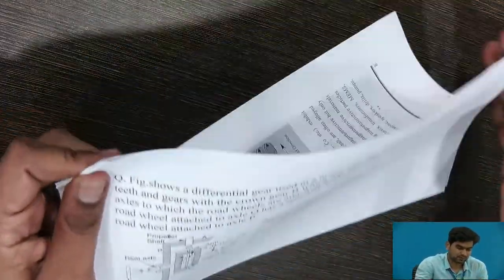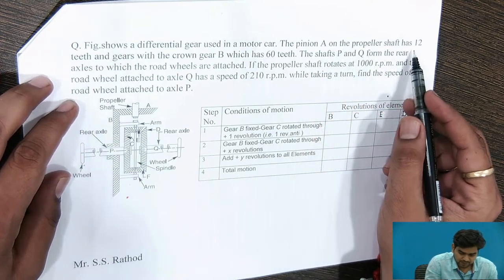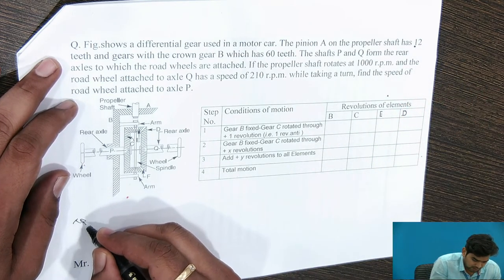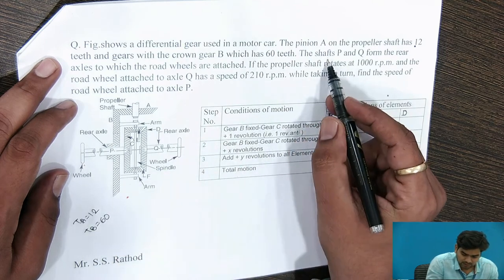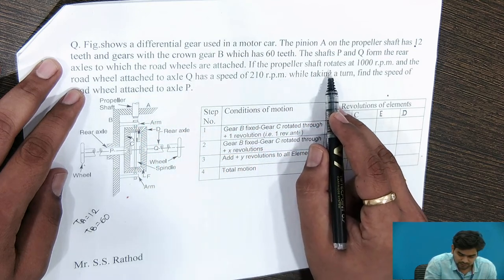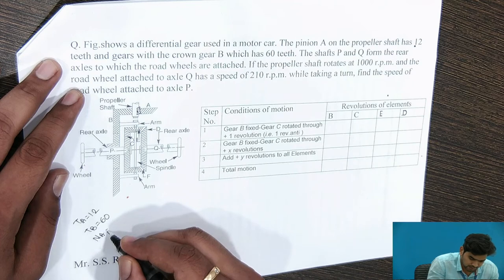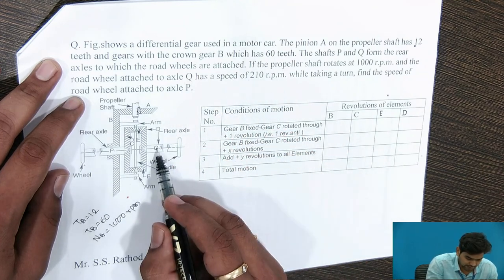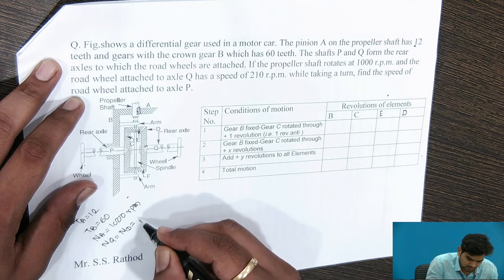Now we will see one example. Given data: the pinion A on the propeller shaft has TA = 12 teeth and meshes with the crown gear B having TB = 60 teeth. The propeller shaft rotates at NA = 1000 RPM. The road wheel attached to Q has a speed of NQ = ND = 210 RPM. We need to find the speed of wheel P.